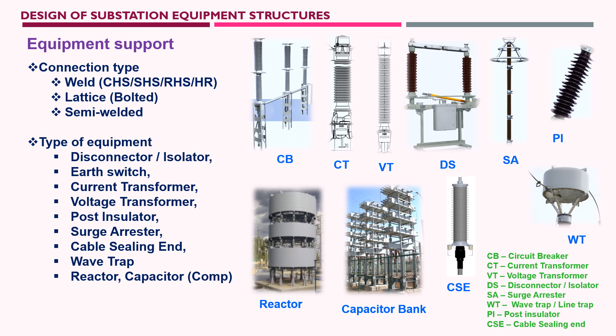Welded type is a square hollow section or circular hollow section welded at the top and bottom to become a rigid support for equipment. The second type is a lattice support structure, where all four legs — made of angle section, UPN, or channel section — are connected with diagonal or horizontal bracings using bolts. This lattice support structure is a flexible support structure.